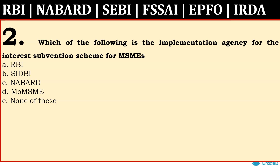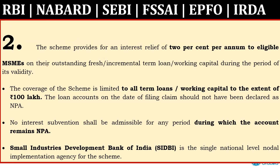Second question: Which of the following is the implementation agency for the Interest Prevention Scheme for MSMEs? The scheme provides 2% interest subvention to eligible MSMEs.